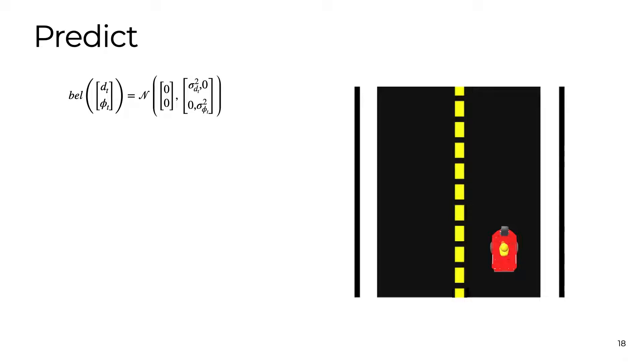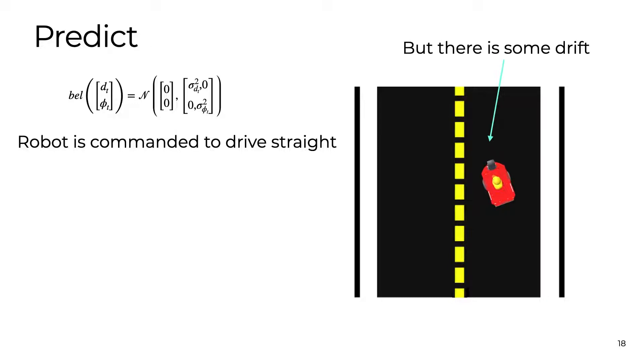Now suppose that we command the robot to drive straight for some period of time. The robot might not drive exactly straight because of noise in the system. We can feed these control values into our EKF propagation equation to get our prior belief bell bar.